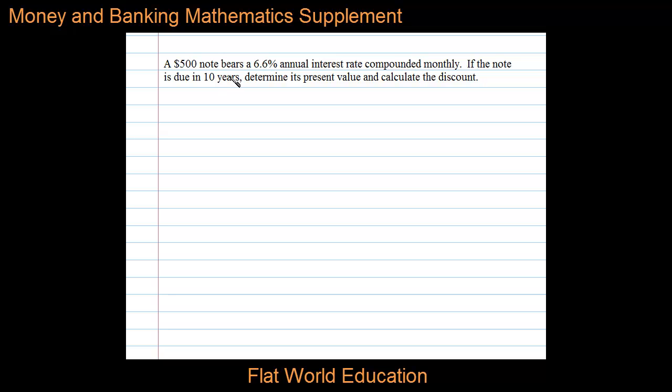A $500 note bears a 6.6 percent annual interest rate compounded monthly. If the note is due in 10 years, determine its present value and calculate the discount.